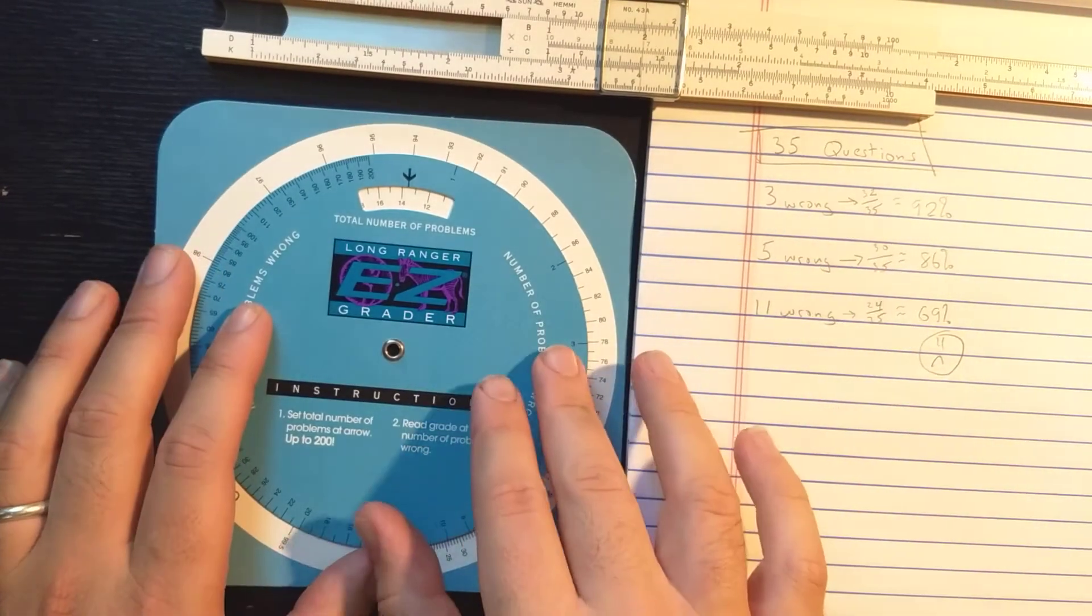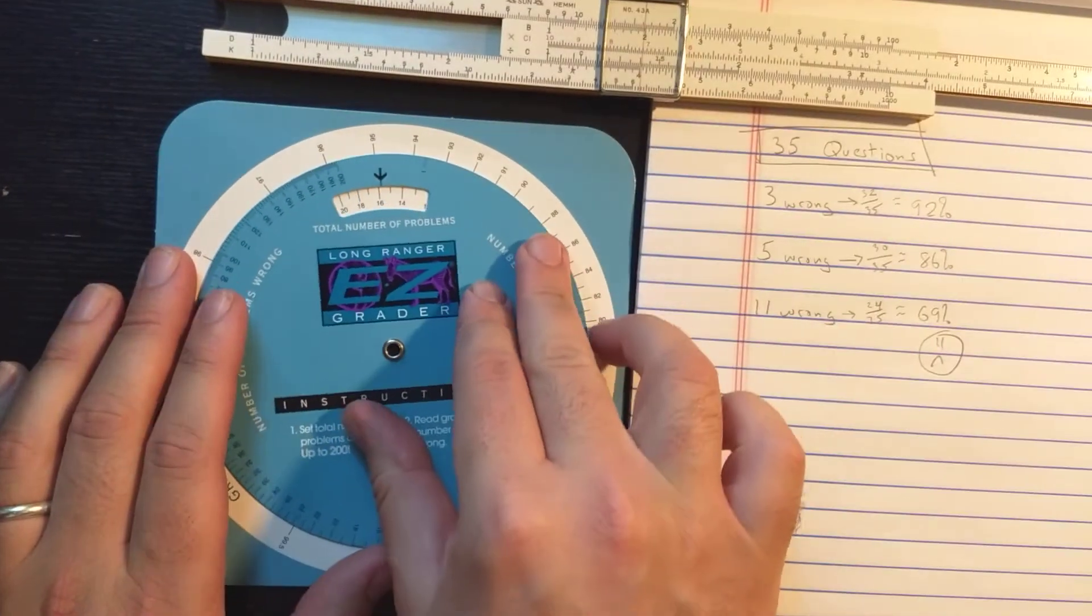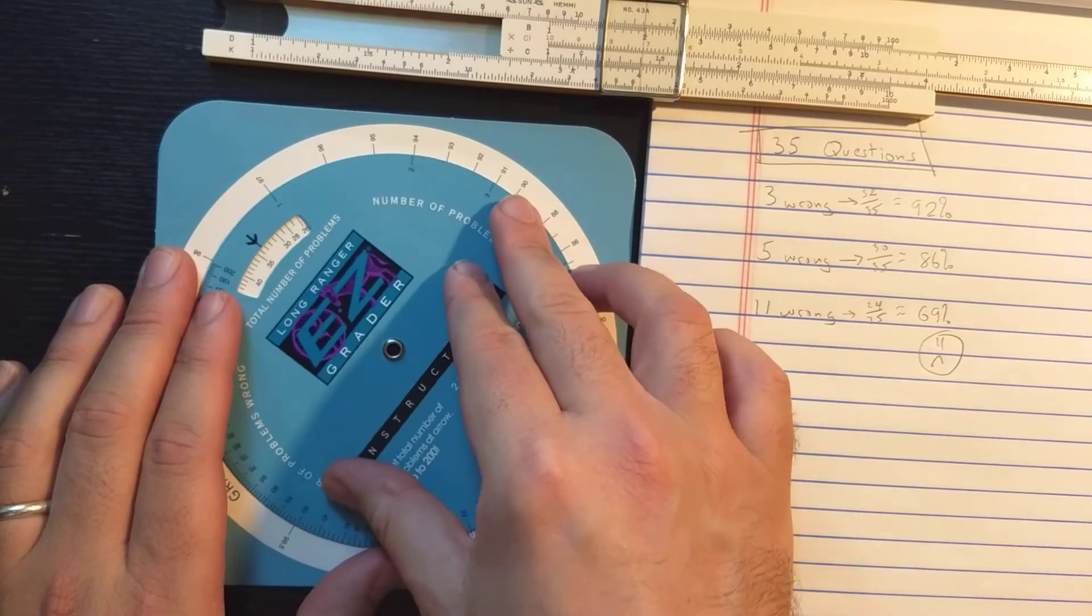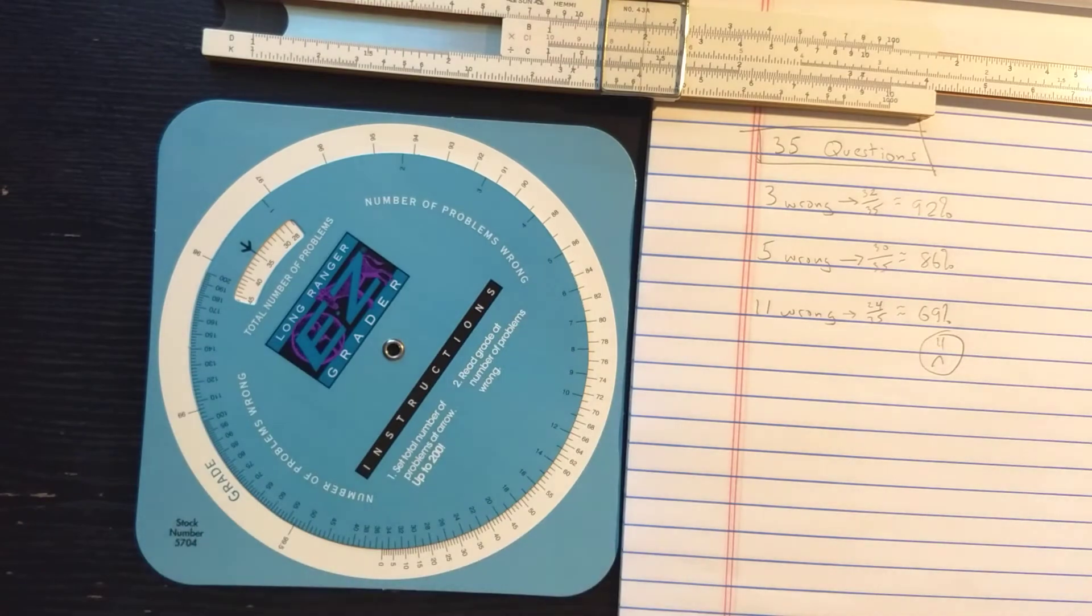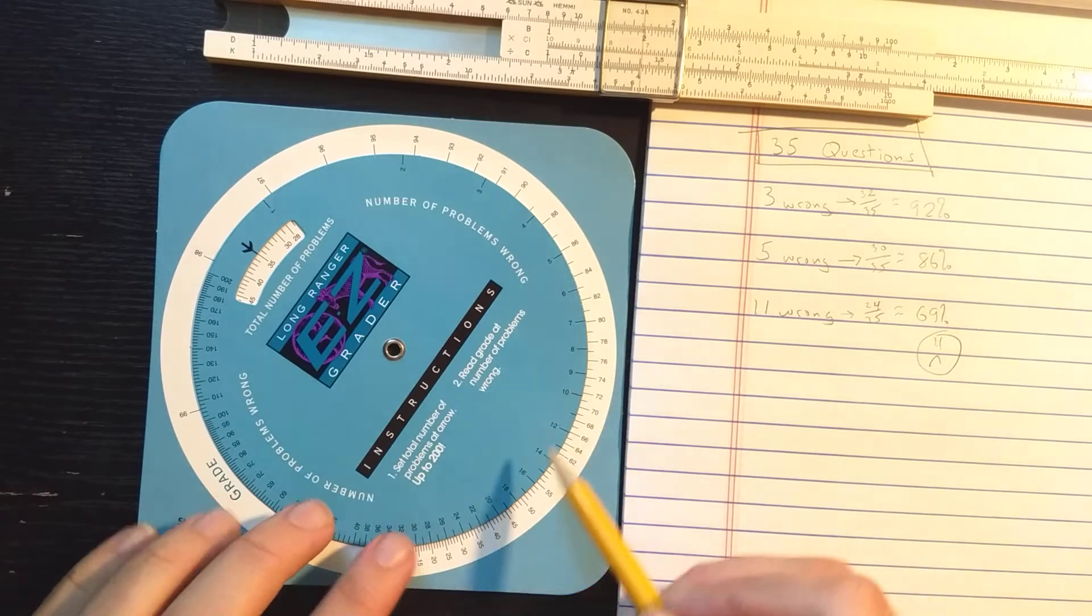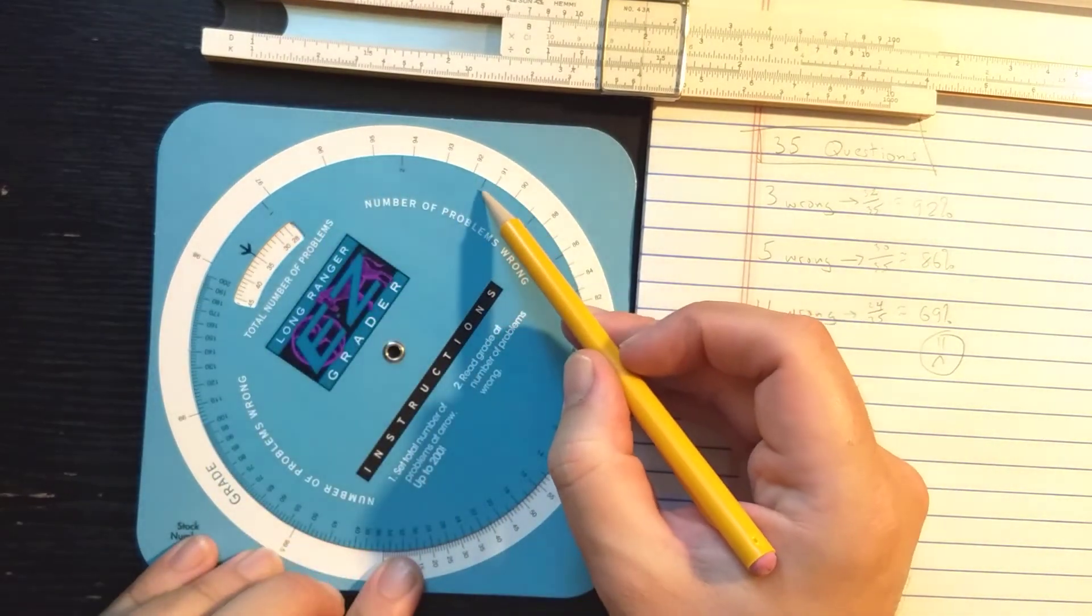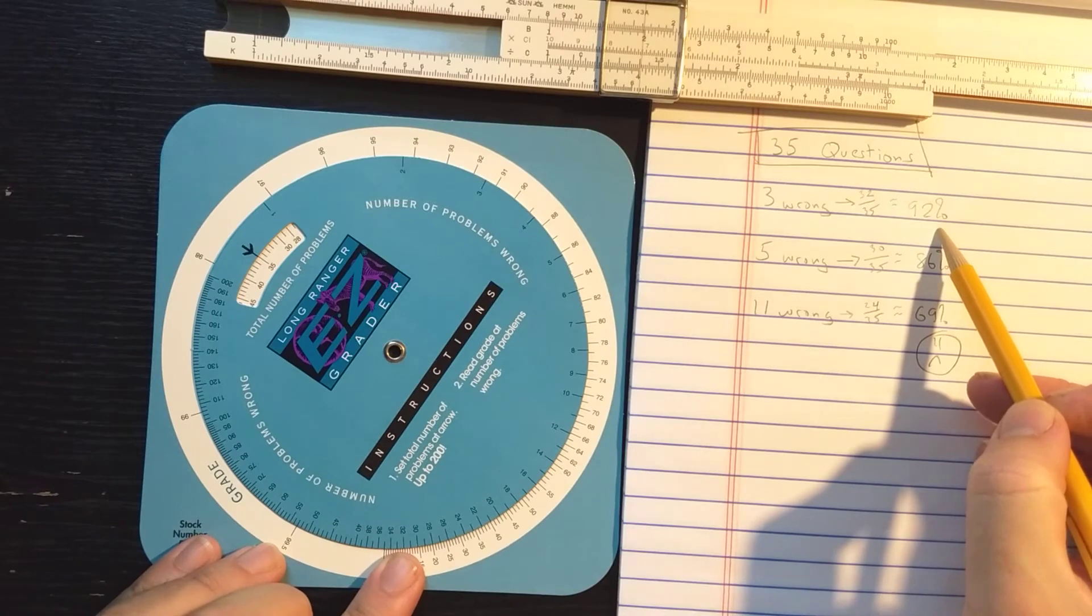So, okay, let's see how it works for this test. It has 35 questions. So here I need to select that under this arrow for total number of problems. So I set that to 35. Then the idea is I leave this alone and I grade everybody's test by figuring how many they had wrong. Three questions wrong. Let's find that here between 91 and 92, round up to 92.